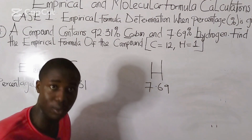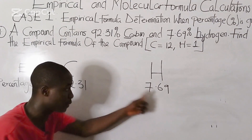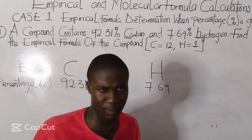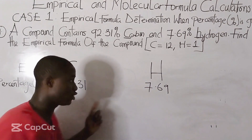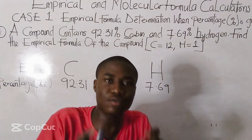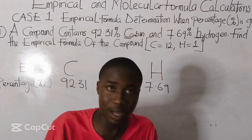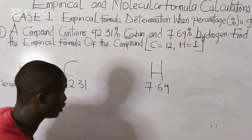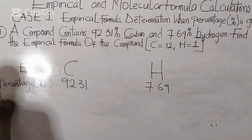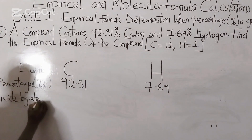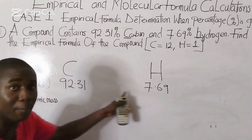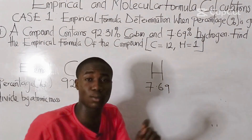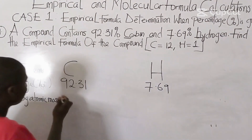The next step is to divide by atomic mass. We divide each percentage value by the atomic mass of the respective element. For carbon, the atomic mass is 12; for hydrogen, it is 1. So: 92.31 ÷ 12 = 7.7, and 7.69 ÷ 1 = 7.69.